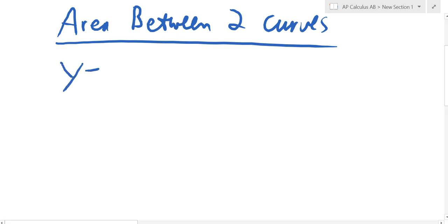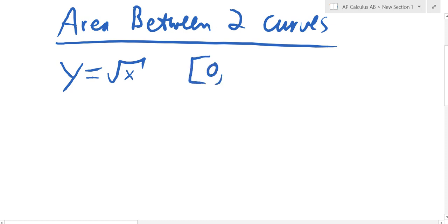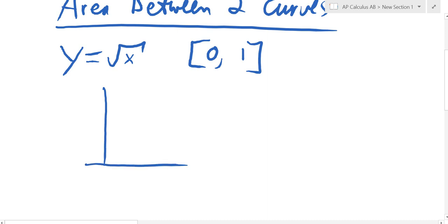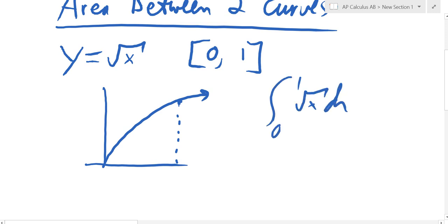For instance, if I said find the area between y equals root x and the x-axis on the interval 0 to 1, that would just be the integral from 0 to 1 of root x dx. I'm not going to do the integral right now, but I hope everybody can do that. We said if they ask specifically for area and the graph is below the x-axis, you've got to turn it positive.